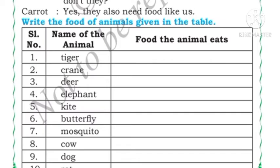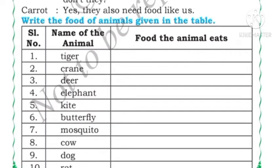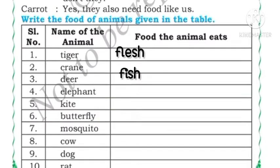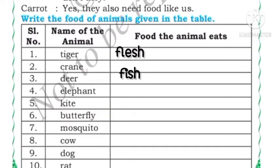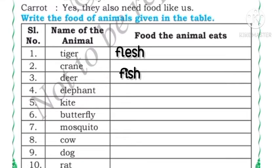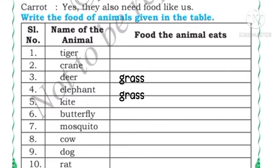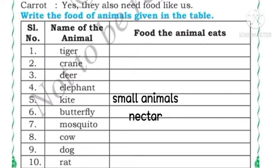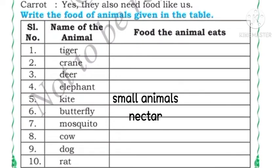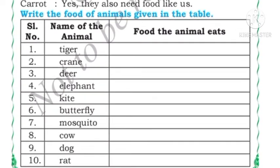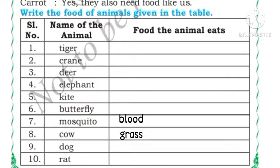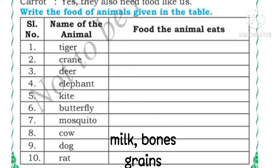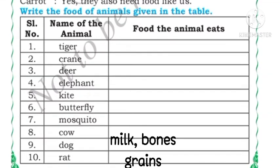Let us write the food of the animals given in the table. Tiger eats flesh. Crane eats fish. Deer eats grass. Elephant also eats grass. Kite — a big eagle — eats other animals. Butterfly eats nectar. Mosquito sucks blood. Cow eats grass. Dog eats bones, flesh, and milk. Rat eats grains.